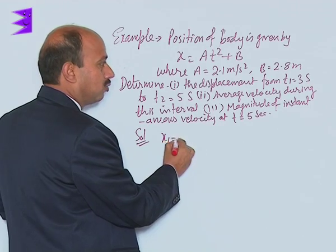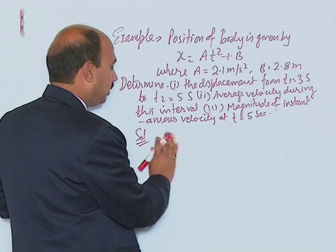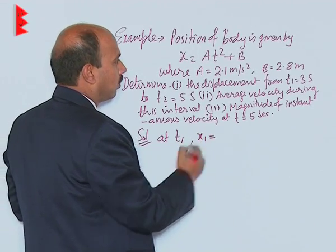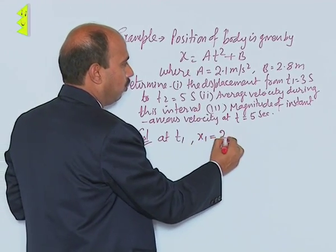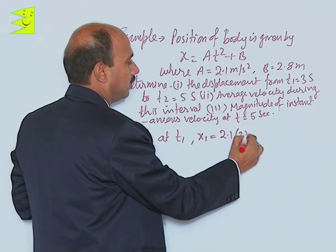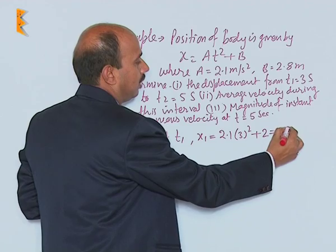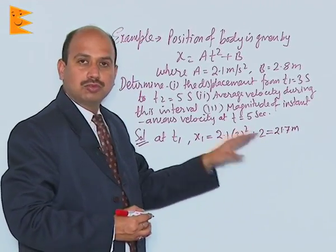So you can calculate x₁ at t₁. x₁ = A, that is 2.1 into 3 square plus 2, that is equal to 21.7 meters. See, you have calculated x₁.